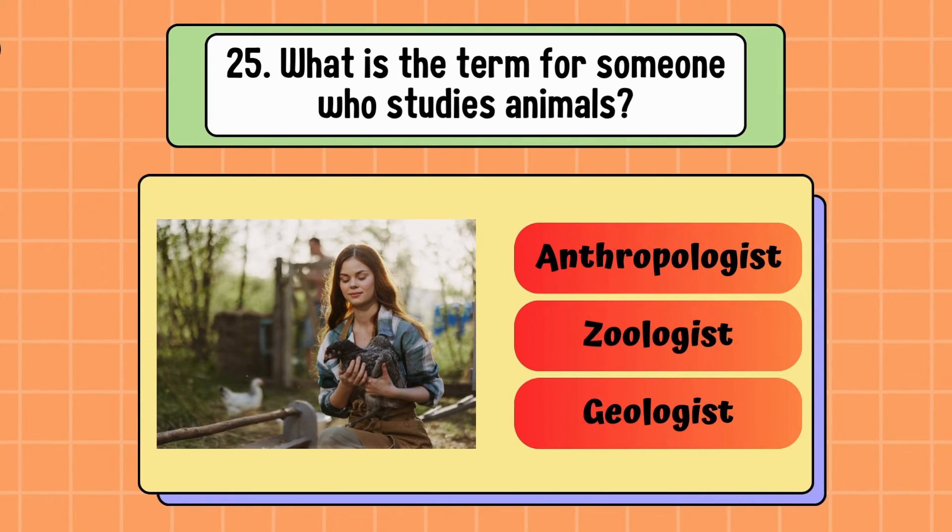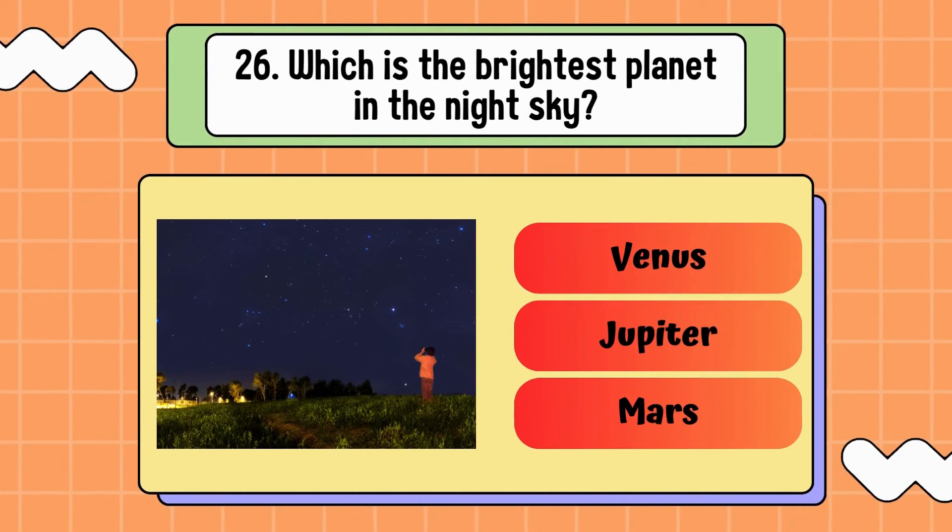What is the term for someone who studies animals? Anthropologist, zoologist, or geologist? Correct answer is zoologist. Which is the brightest planet in the night sky? Venus, Jupiter, or Mars? Answer is Venus.